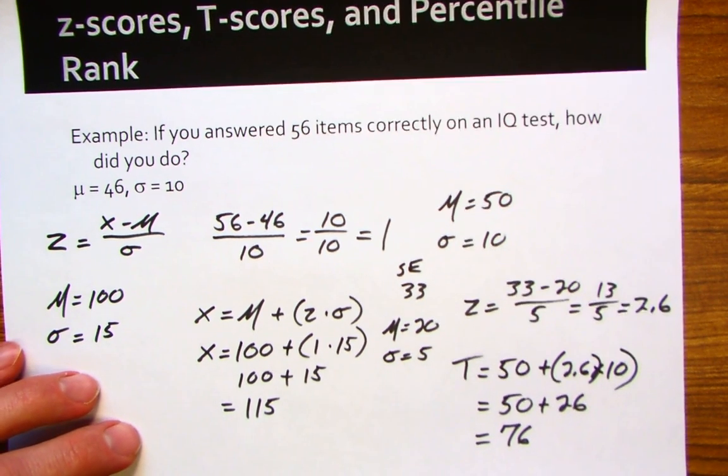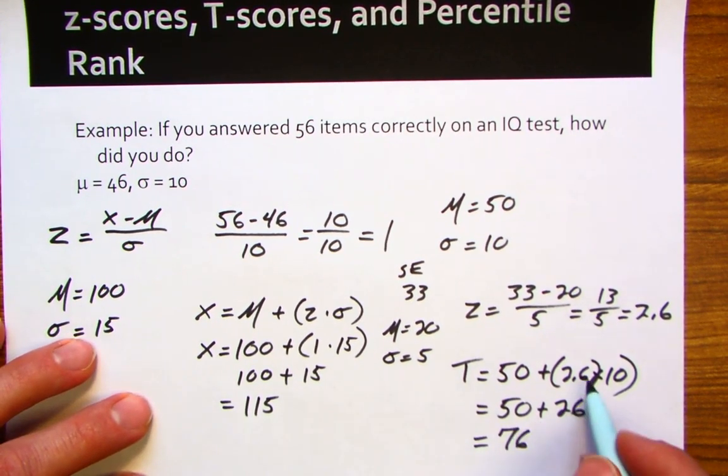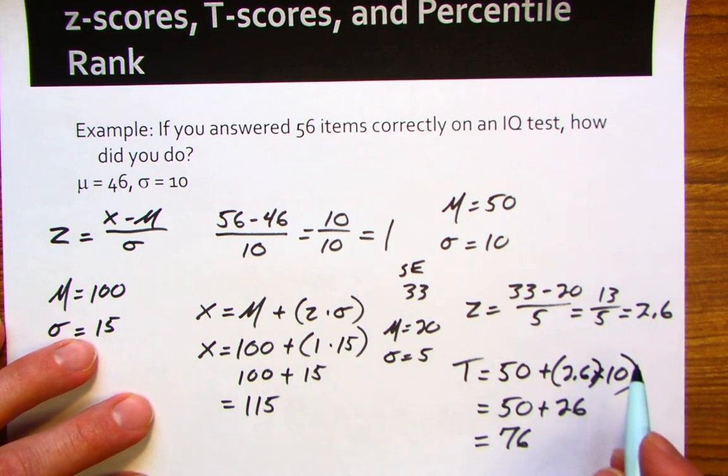Your t-score ends up being 76. What we know from this is it's over 2.5 standard deviations above the mean for the score.